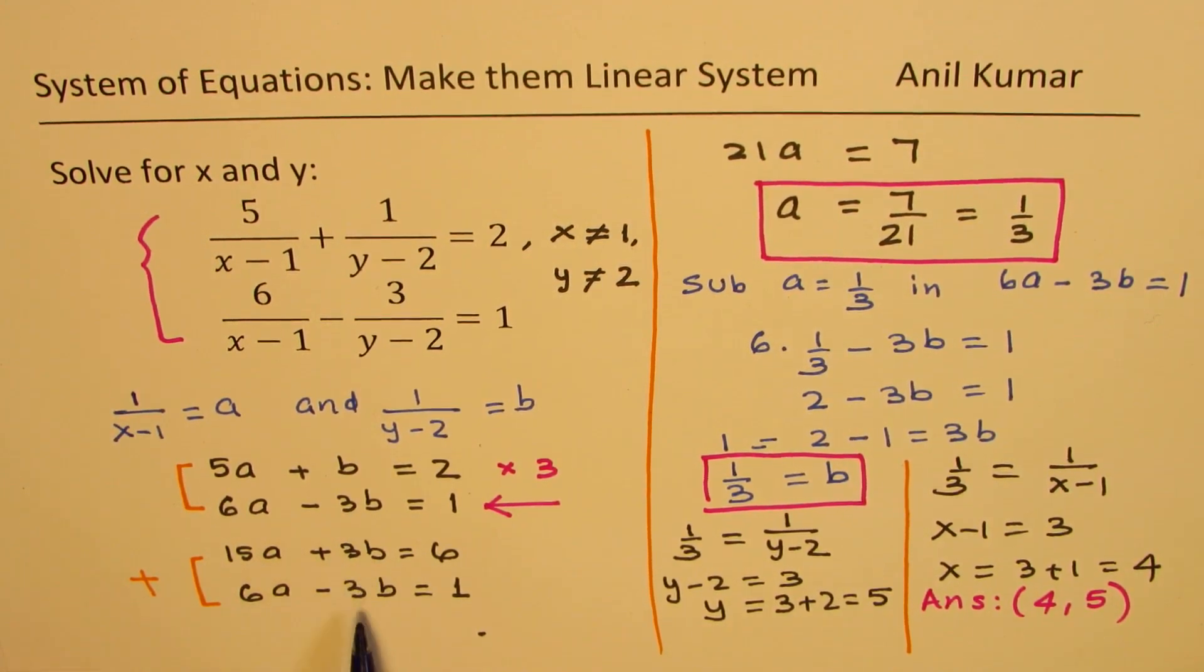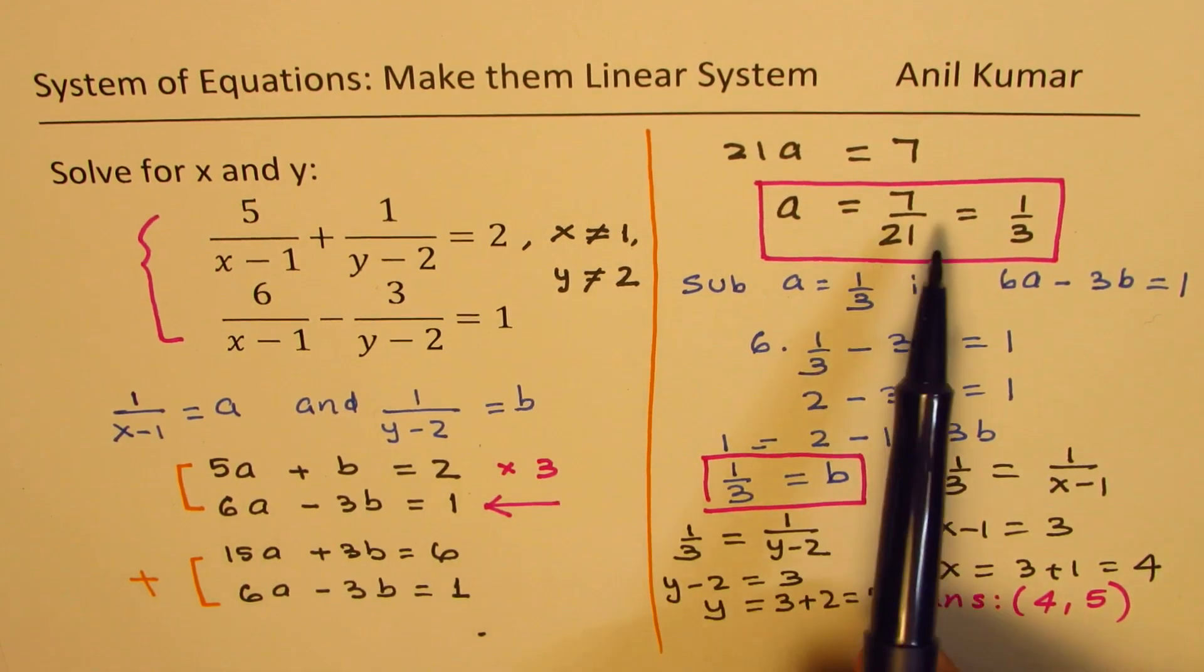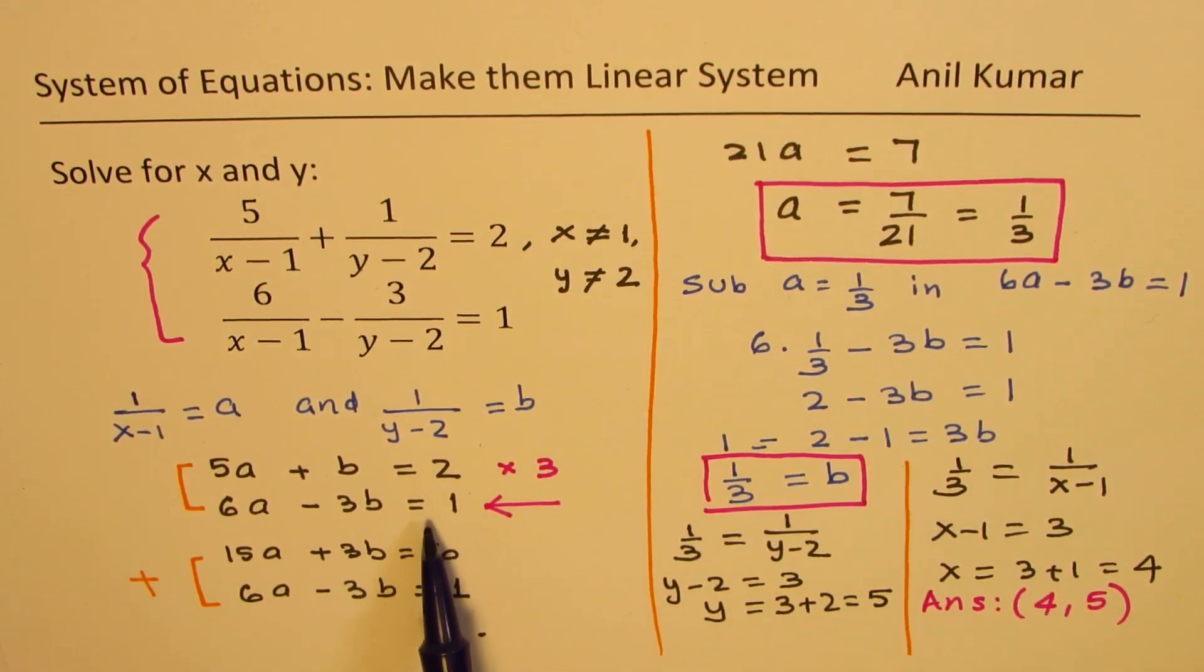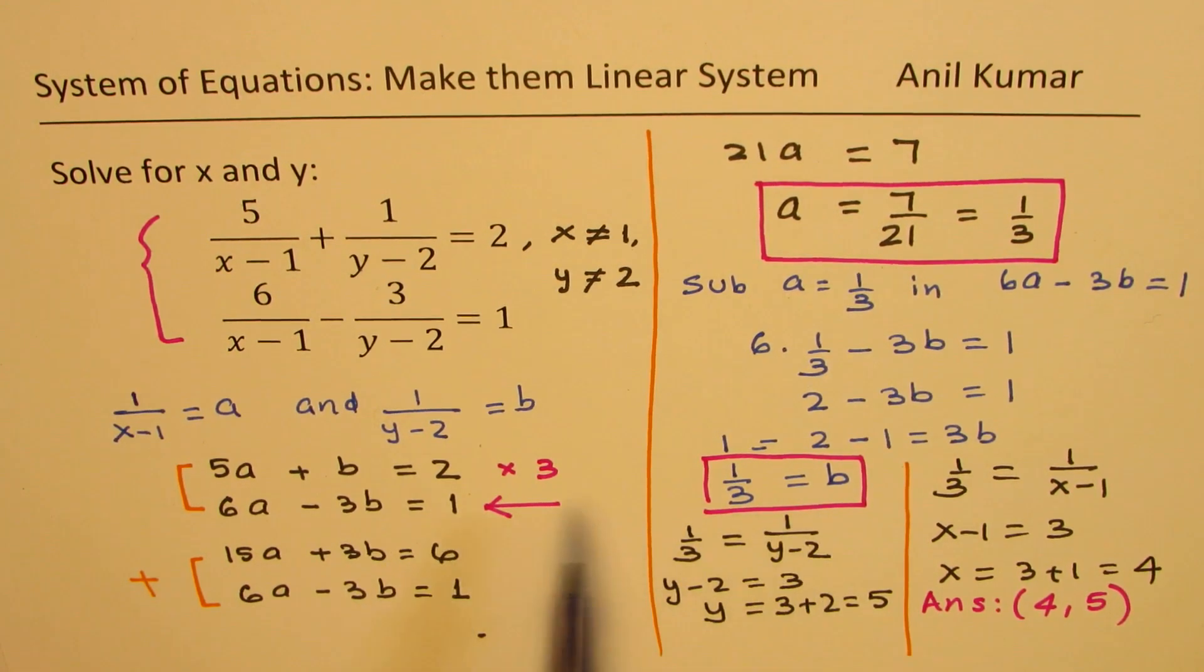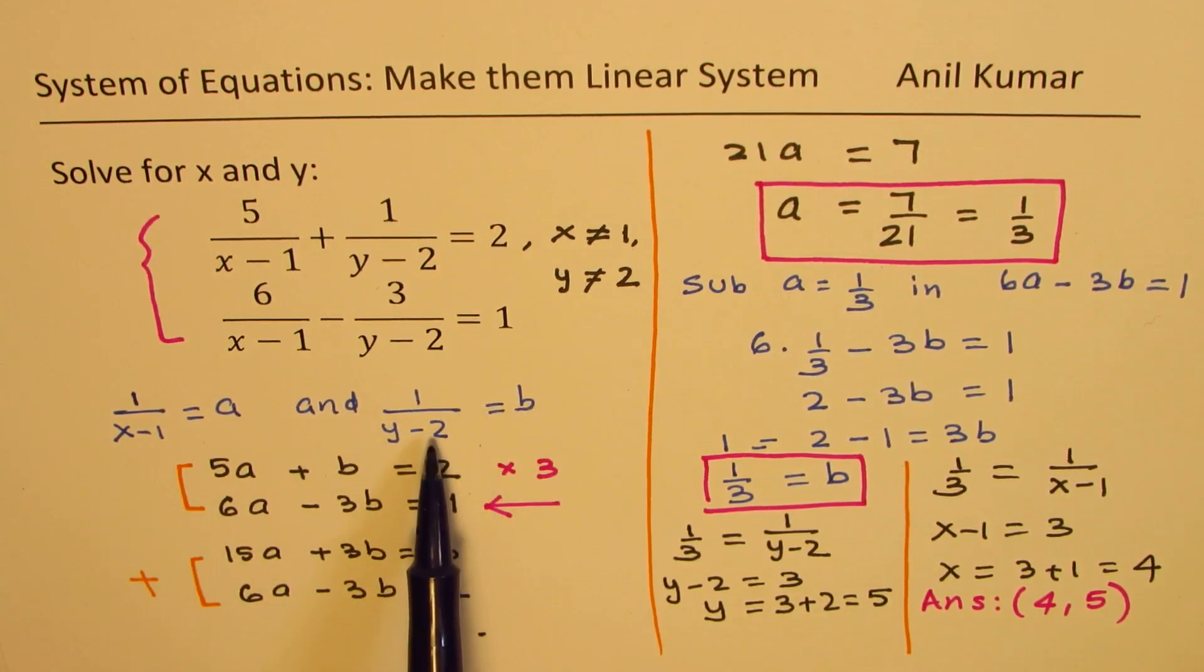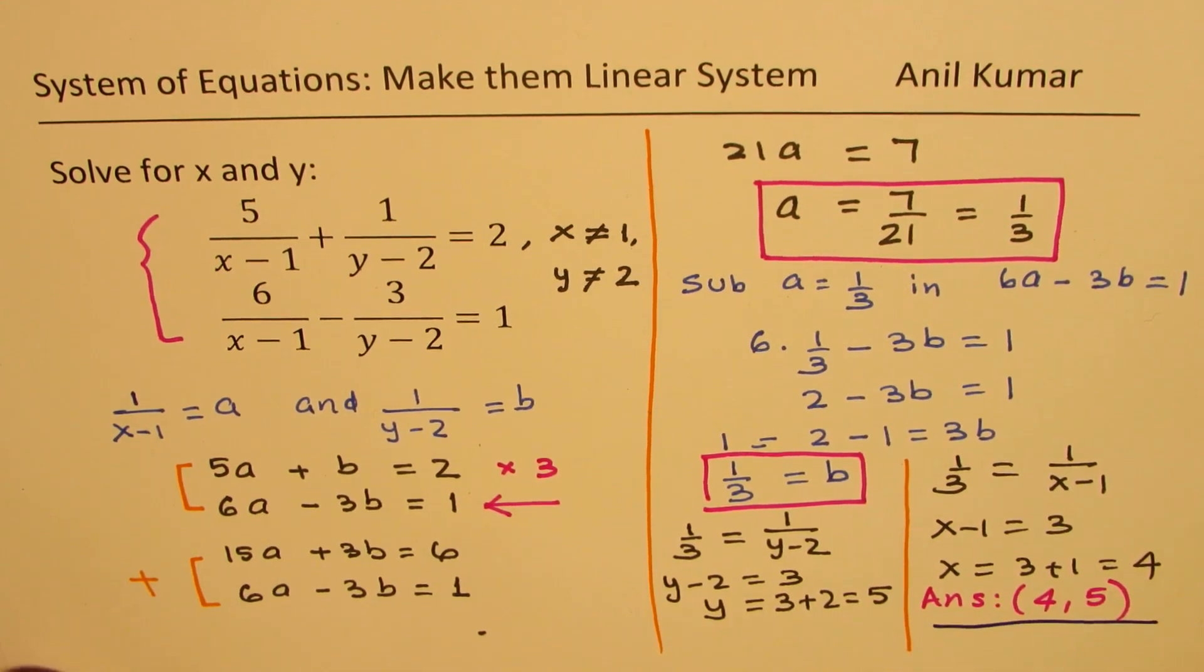We eliminated b by multiplying the first equation by 3, found the value of a, substitute the value of a in the second equation, modified equivalent second equation, found the value of b. Then once we got a and b, we got the values of x and y by reversing the substitution. And so we can actually now solve these equations using system of linear equations.